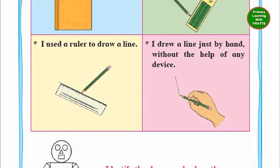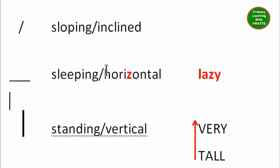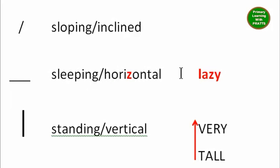Let's learn how to remember these lines. The most confusing ones are horizontal and vertical. You must remember: sleeping equals horizontal. Horizontal is lazy — it always likes to sleep. Sleeping lines are horizontal lines. That is why they are known as horizontal, because they love to sleep.